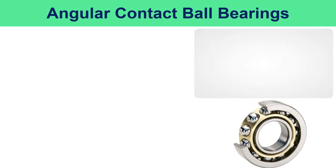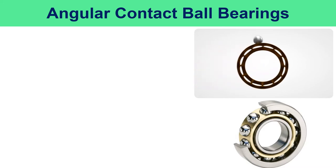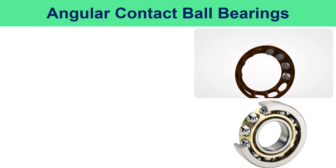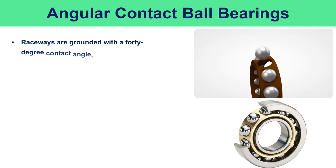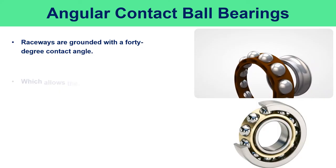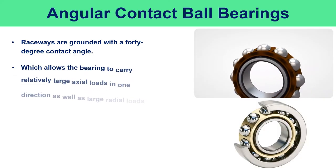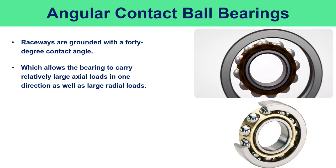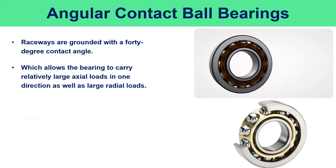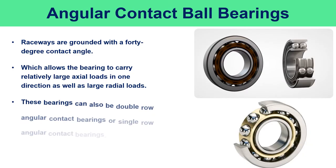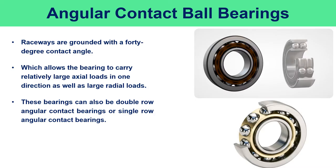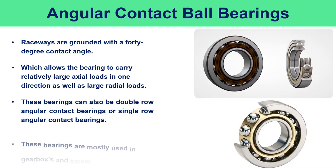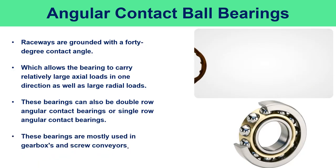Angular contact ball bearings consist of a retaining cage, a row of balls, and inner and outer races. The raceways are ground with a 40-degree contact angle, which allows the bearing to carry relatively large axial loads in one direction as well as large radial loads. These bearings can be double-row or single-row angular contact bearings and are mostly used in gearboxes and screw conveyors.